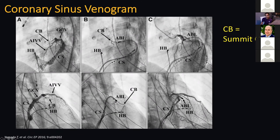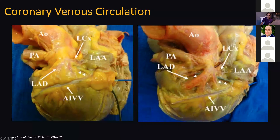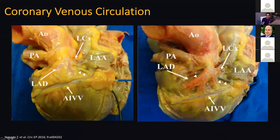In one view it looks like you're right on top of the LAD, but in the AP view you're not. You always want to do two views on your coronary angiograms to figure out if you're near a major epicardial vessel. You cannot rely on the presence of epicardial fat, and you're still obligated to do a coronary angiogram.